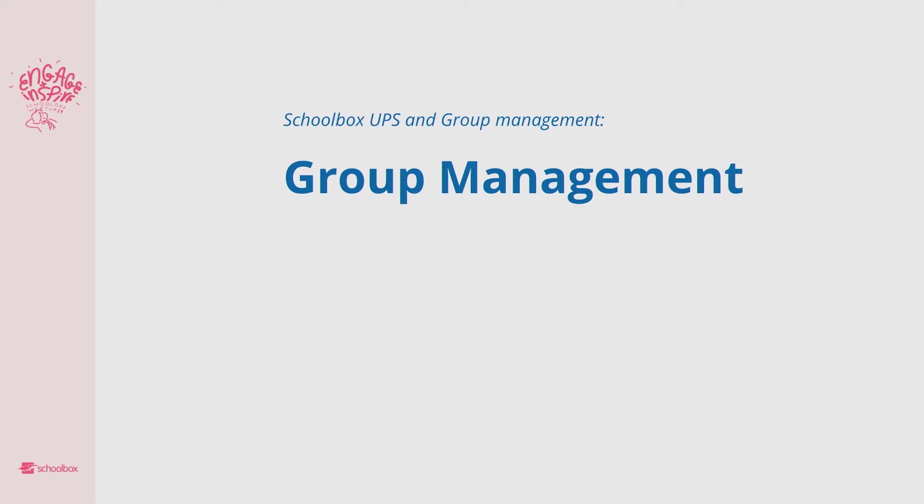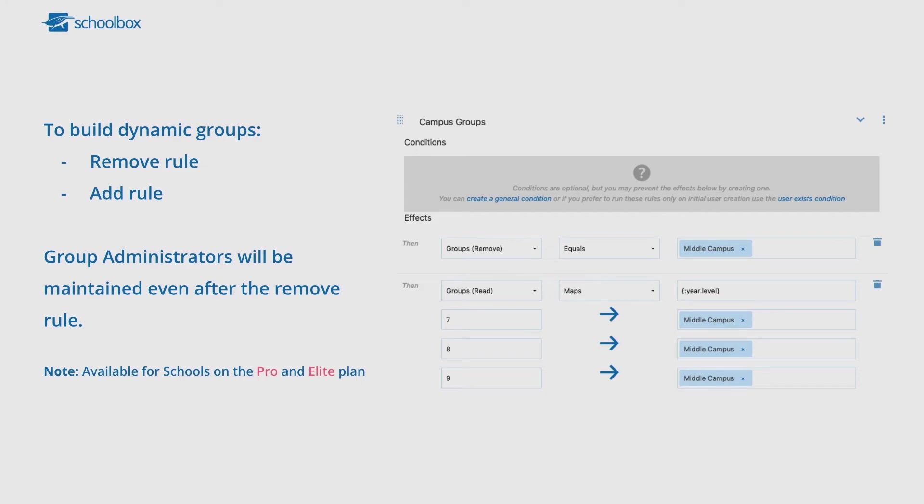So then how does this all tie into group management? Because that's obviously one of the things most people ask: how do I use the UPS to manage my groups? For those of you on Pro and Elite — because it doesn't work on Basic — dynamic groups are really, really simple. They are: remove everything from a group, add everything to a group. If you're a group administrator you will still remain within that group. All other users will be removed.